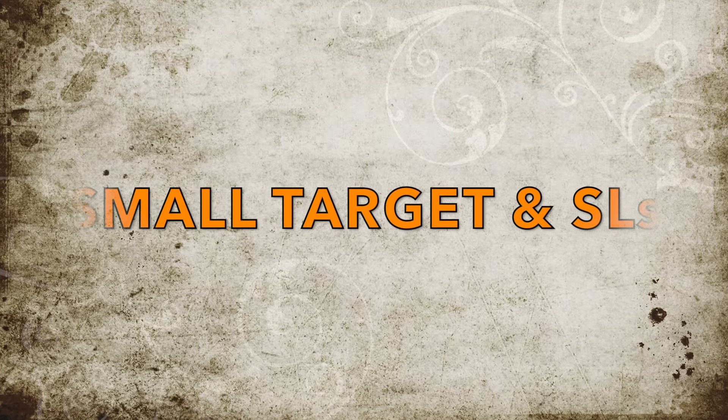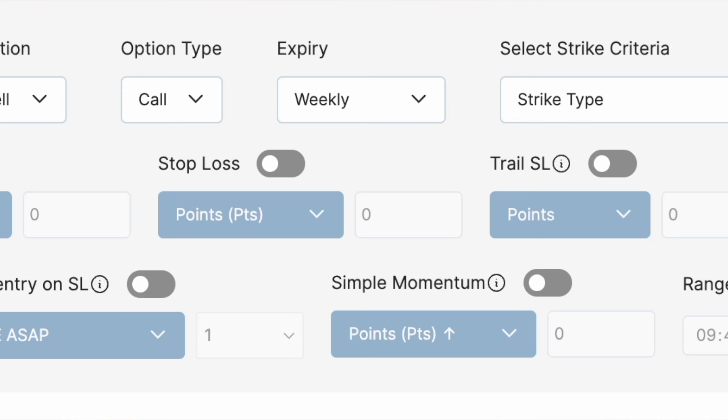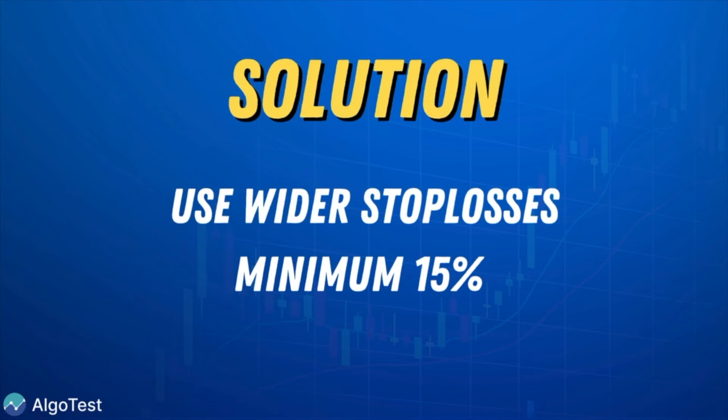Mistake 2: Small Stop Loss and Targets. Using a tight stop loss like 1%, 2%, or 2-3 points may potentially not work as well in the live market as they would in a backtest. AlgoTest uses 1-minute OHLC data for backtesting. For example, if entry happens on the 15th second of a minute and the price hits the stop loss within the same 1-minute candle but the candle closes above the stop loss price, a backtest would show an entry. However, in live trading and forward tests, your leg would have exited. Solution: use wider stop losses that aren't hit within a minute — a minimum of 15% is a good starting point.